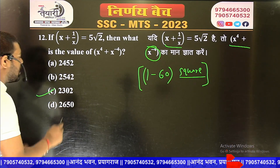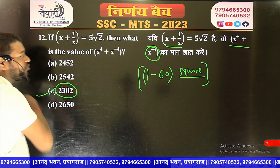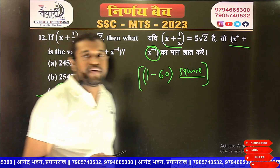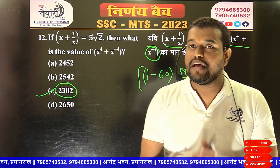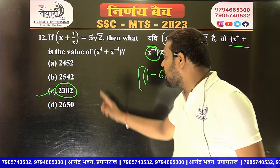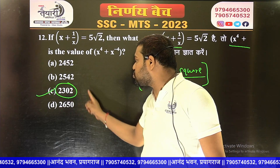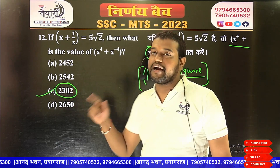From a perfect square, what will happen? 2 will be less — that will be our answer. For example, if you remember that the square of 48 is 2304, then 2 will be less, and 2302 will be our answer.